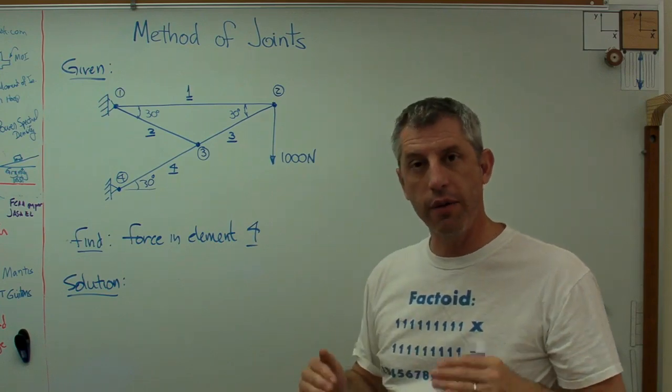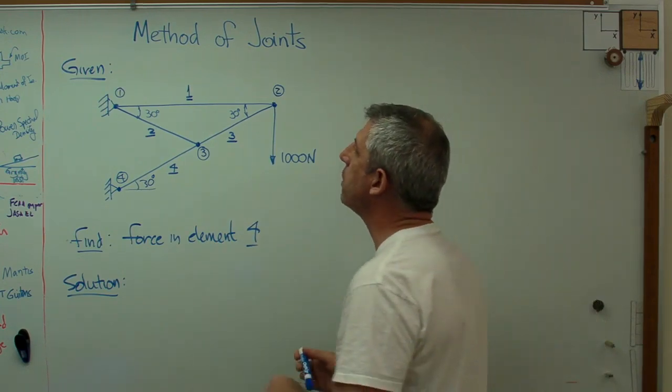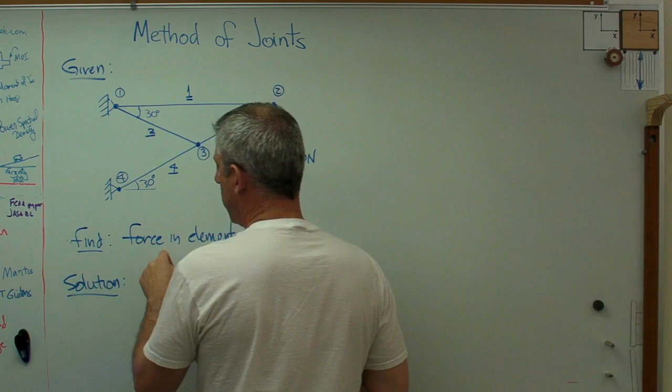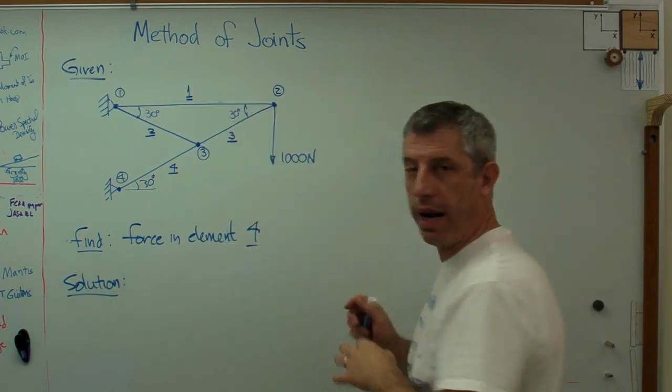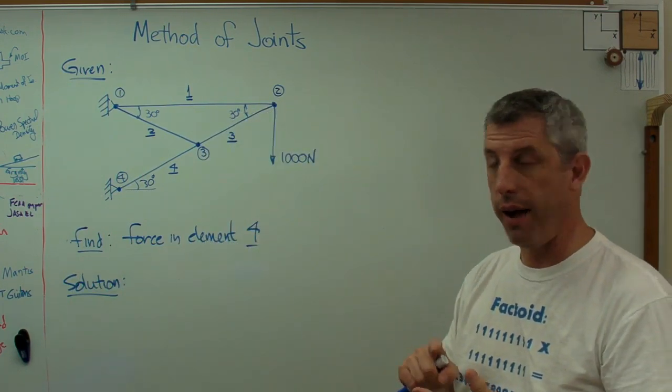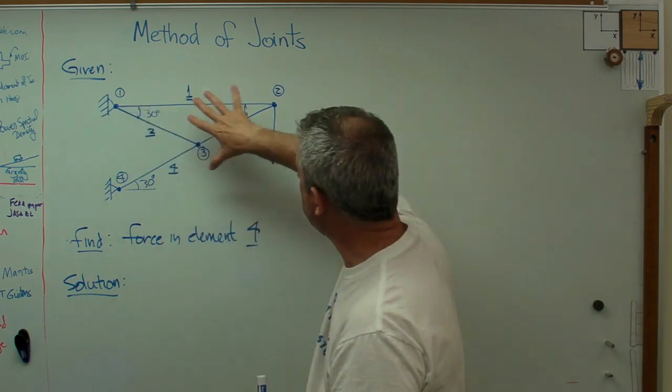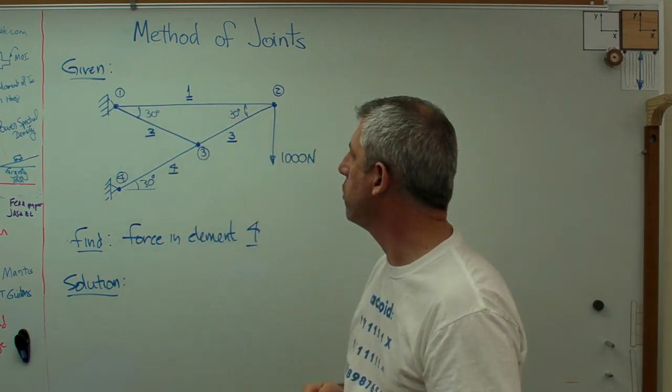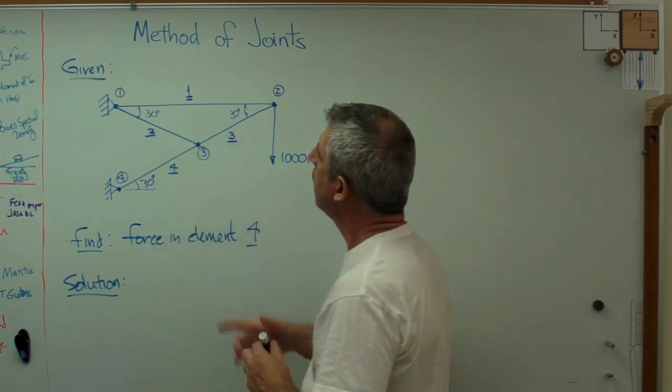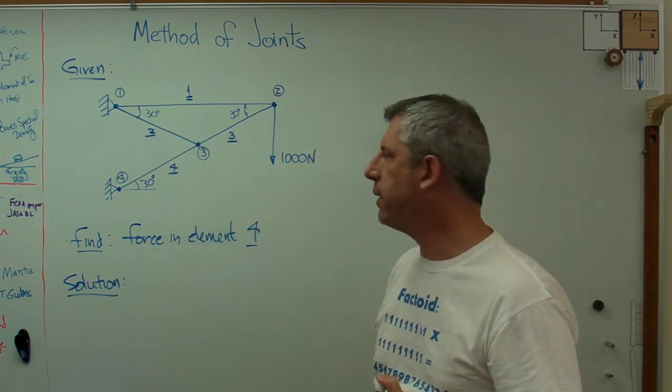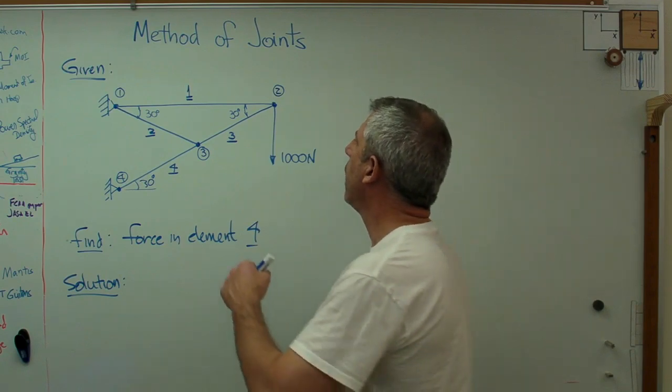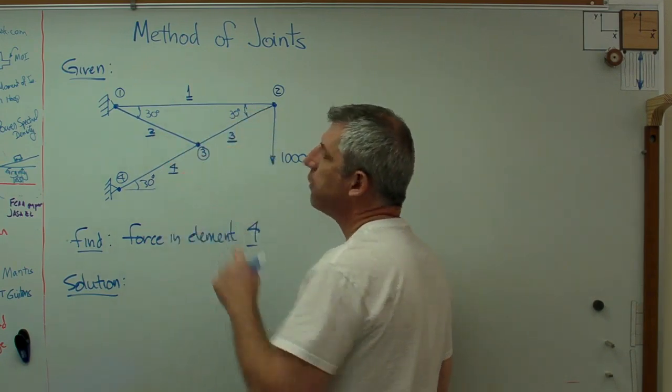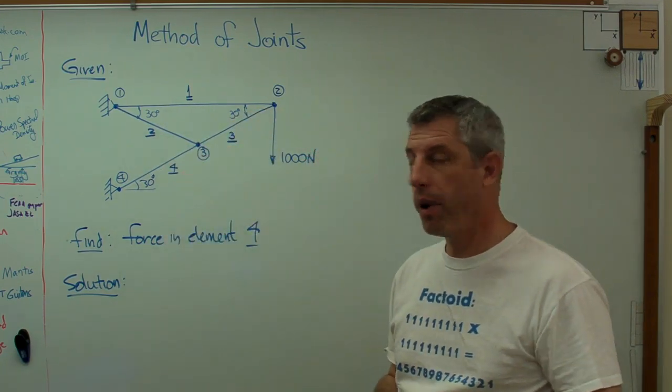I'm going to use GFSA format, just like I always do: given, find, solution, and at the end answer. So given, I've got the geometry of this very simple truss here. It's only got one internal joint, and I've got all the angles here. Notice I don't have any dimensions on there. Turns out we don't need them.